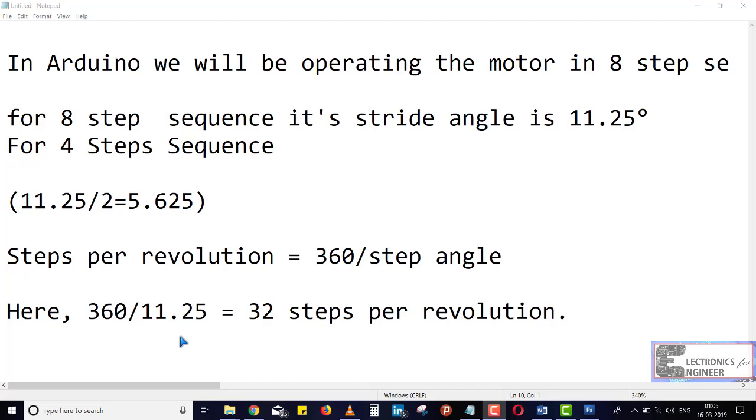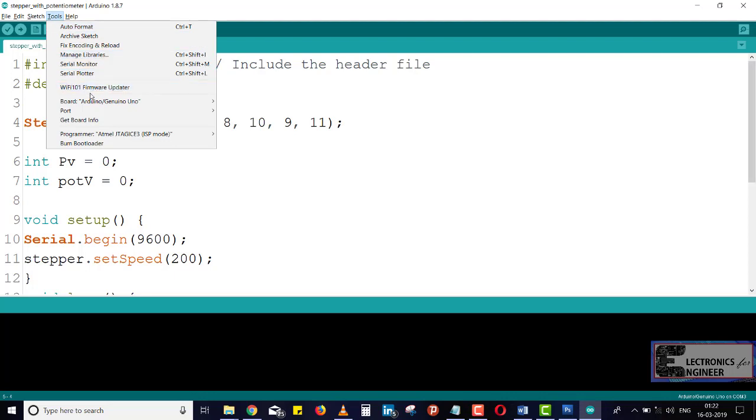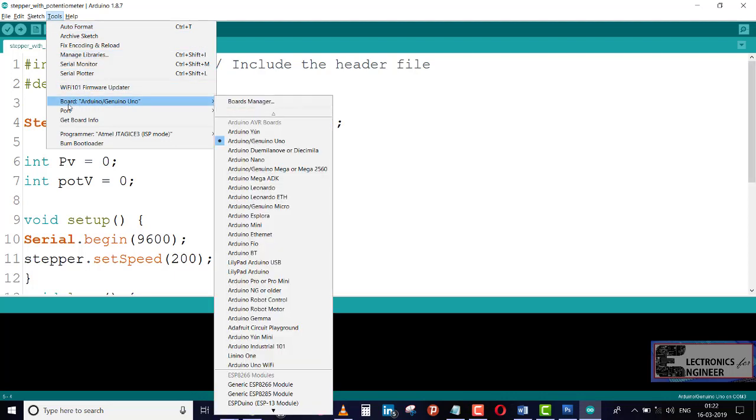By using these 32 steps, we are defining this step size in our program. Now we will see our programming part. Just make sure that you have selected this Arduino UNO board and port and everything correct. And after that,